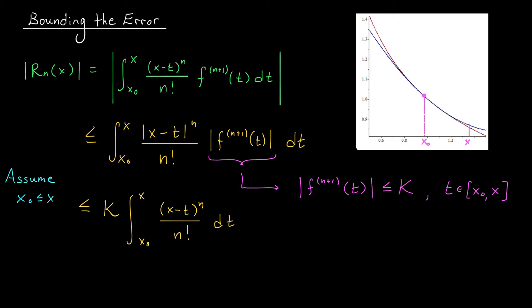And would you look at this? This is an integral that we can actually evaluate. Making the substitution u equals x minus t and changing the bounds accordingly, we can rewrite this as minus k integral from x minus x0 to 0 of u^n over n factorial du.